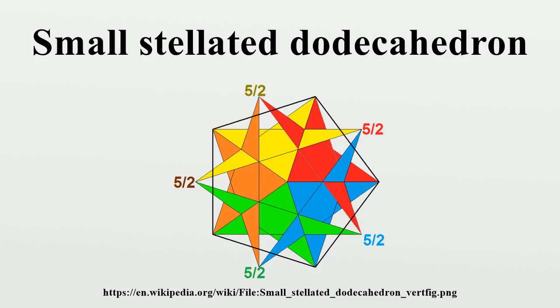If the pentagrammic faces are considered as five triangular faces, it shares the same surface topology as the pentakis dodecahedron, but with much taller isosceles triangle faces, with the height of the pentagonal pyramids adjusted so that the five triangles in the pentagram become coplanar.